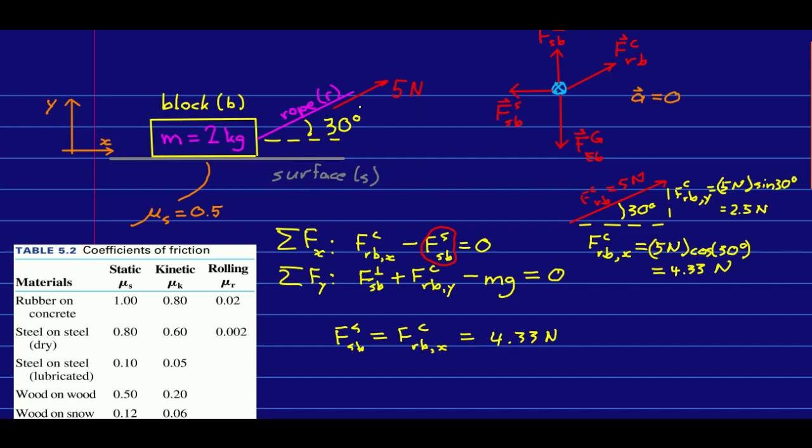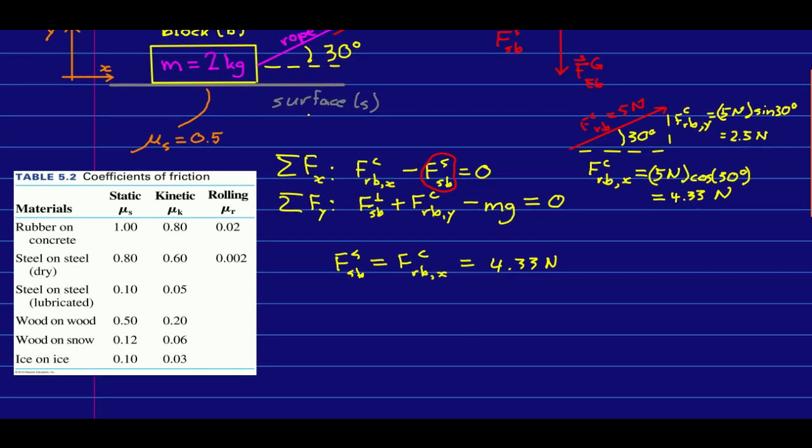Suppose we wanted to know instead how hard we would have to pull on the rope to get this block sliding. Now we actually are asking how hard do we have to pull so that the friction ends up getting to its maximum value. Because if we pull any harder than that, then the block will start sliding.